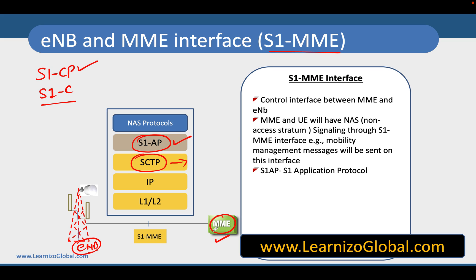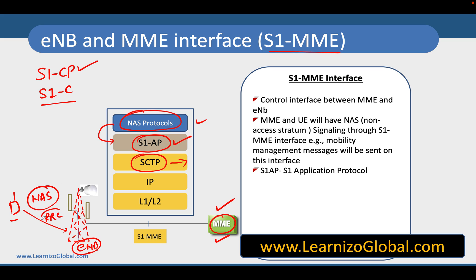There are some messages sent from the UE to eNodeB that are not meant for the eNodeB but are meant for the MME. What eNodeB does is encapsulate those messages into S1AP protocol and forward them to the MME. In short, the UE sends NAS messages to eNodeB encapsulated in RRC messages, and eNodeB sends these messages to the MME encapsulated in S1AP, so that the UE's NAS messages can reach the MME network function.